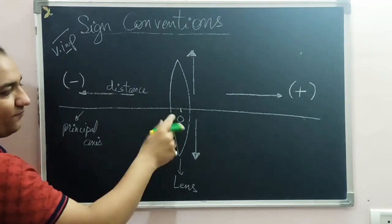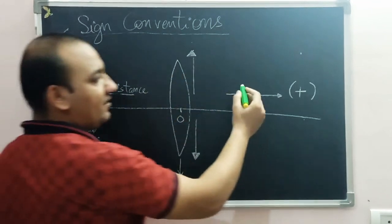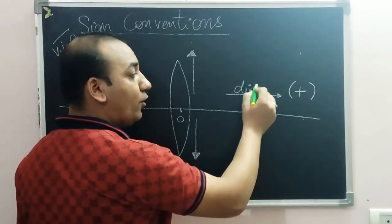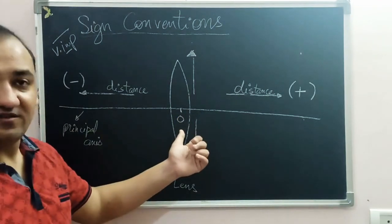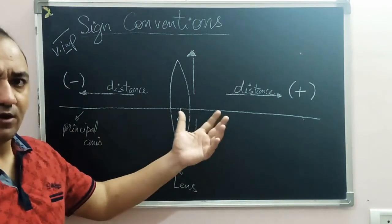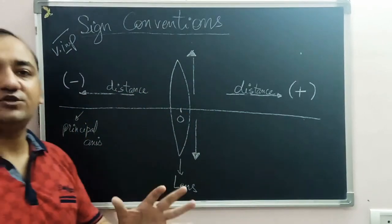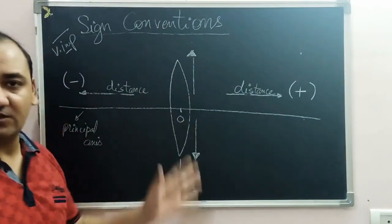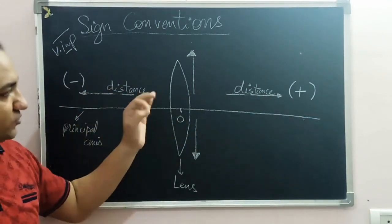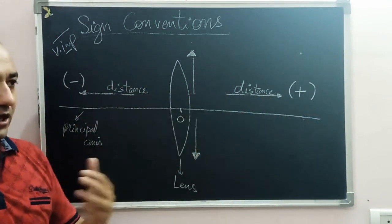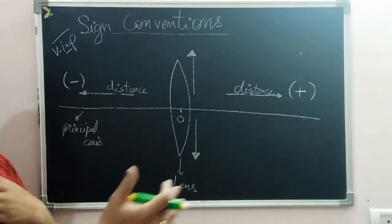For horizontal distances: any distance measured to the left side of the optical center (origin) is taken as negative, while any distance measured to the right side of the optical center is taken as positive. The optical center is like the origin of a coordinate geometry plane, with the principal axis working like the x-axis.